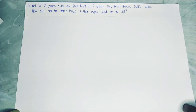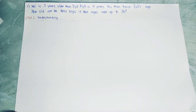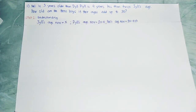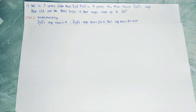The first step is to understand the problem. Step 1: Dil's age is represented by x. Dil's age is 2x minus 4, because Dil is 4 years less than twice Dil's age. Then Dil's age is x.